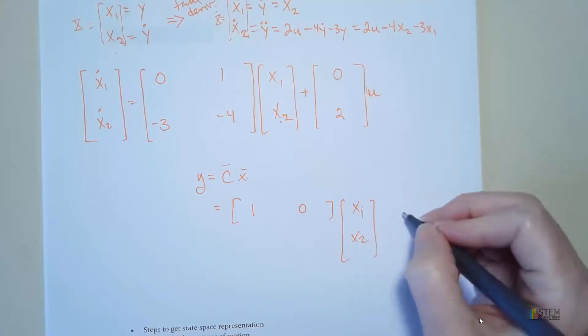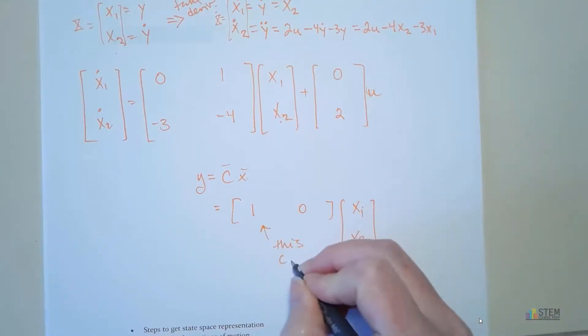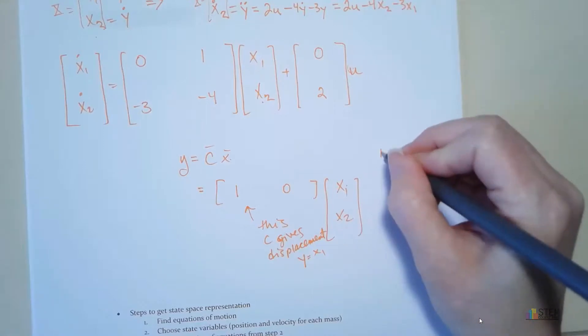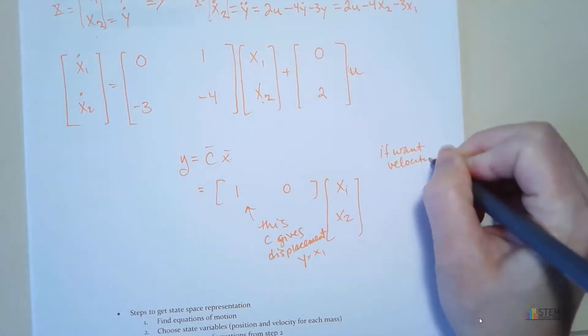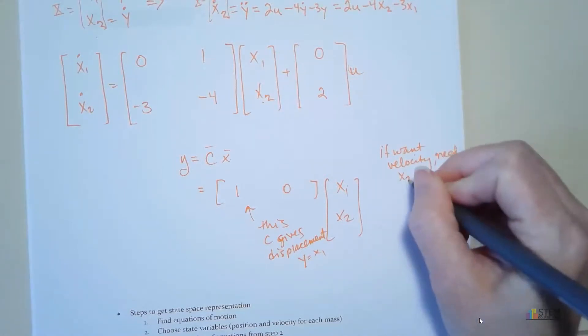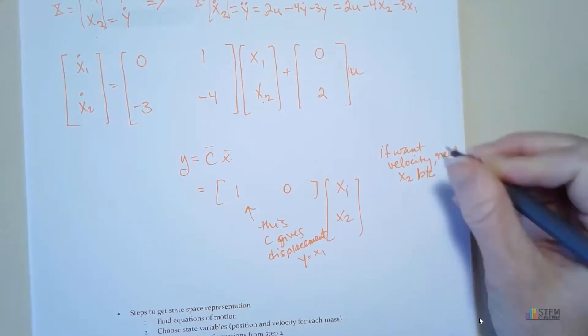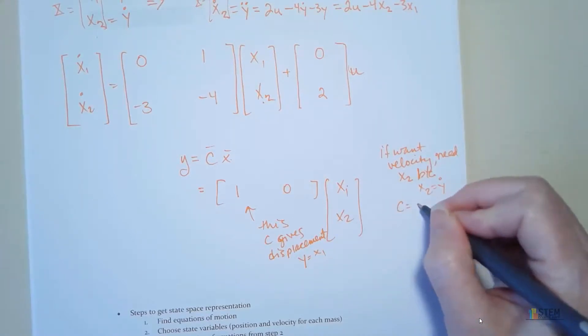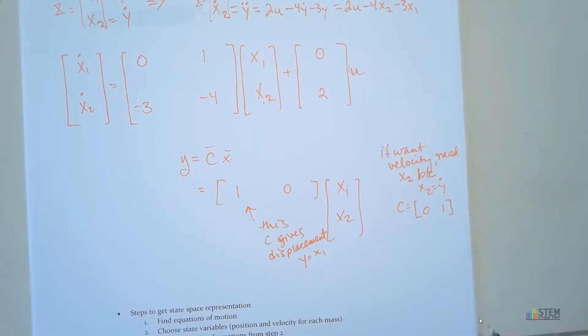Now, let's see. So this C gives displacement y. Because remember y equals x1. Now, let's see what C would need to be if I want velocity. If I wanted velocity, I need x2. And the reason why we need x2 is because x2 is equal to our velocity term, which is y dot. So the C we would need for this would be 0 and 1. So then when you multiplied it, you'd have 0 times x1 plus 1 times x2, which gives you x2. x2 represents velocity.